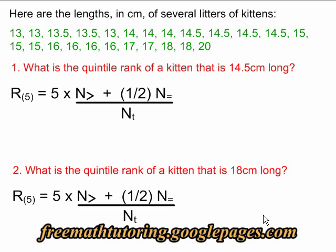We use the quintile formula to find the quintile rank of a certain piece of data within its data set. In this example, we have the lengths in centimeters of a bunch of kittens. There are 24 of them.